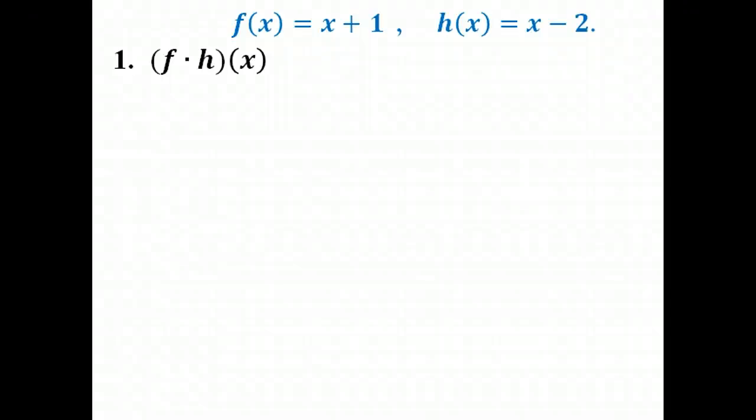Right now we're going to cover a new type of multiplication of polynomials. This particular one says that we want to take this first function, f of x, and multiply it by h of x. So essentially what we're going to do here is we're going to multiply our f of x, x plus 1, times our h of x, which is x minus 2.